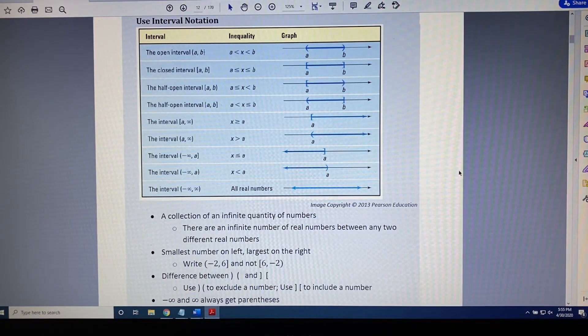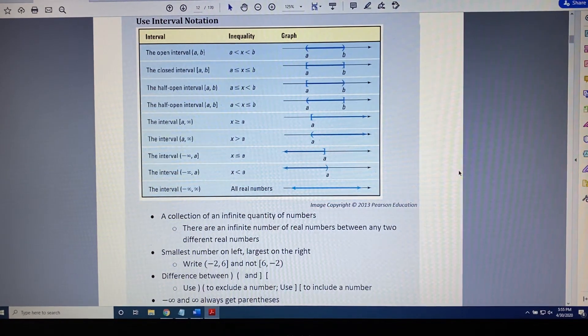Said another way, negative infinity and infinity always get parentheses in an interval. Thank you, everyone.